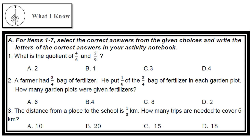Number 2: A farmer had 3/4 bag of fertilizer. He put 1/8 of the 3/4 bag of fertilizer in each garden plot. How many garden plots were given fertilizers? A. 6, B. 4, C. 8, D. 2.